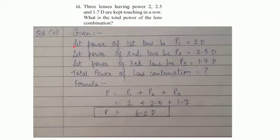Let us write down the given. We know the power of the first lens, we have considered it to be P1 that is 2 diopters. Let the power of the second lens be P2, 2.5 diopters, and the power of the third lens let it be P3 that is 1.7 diopters.